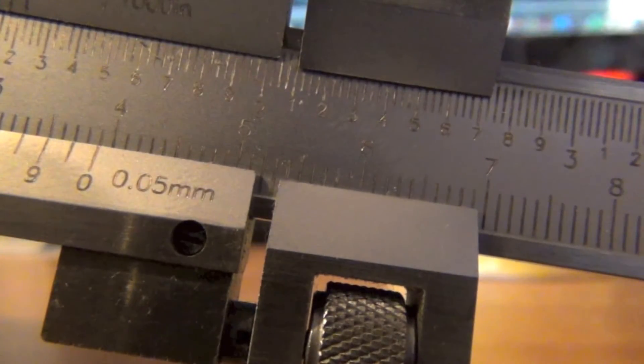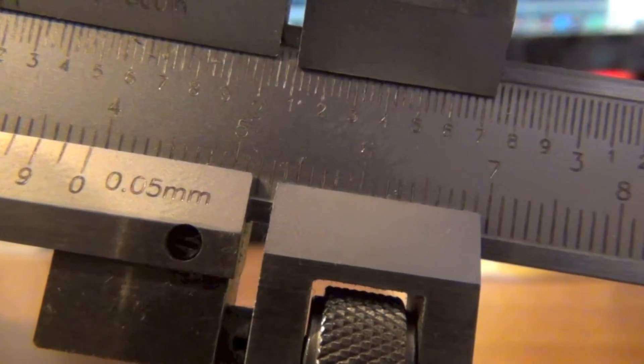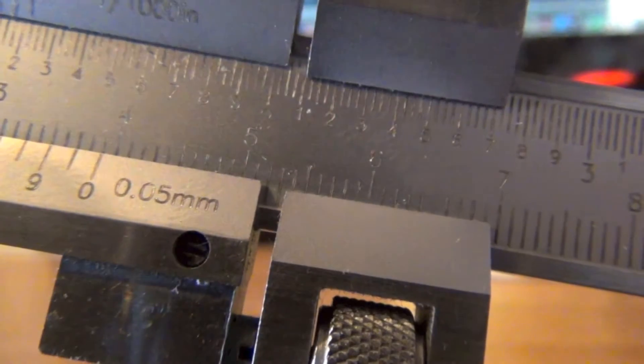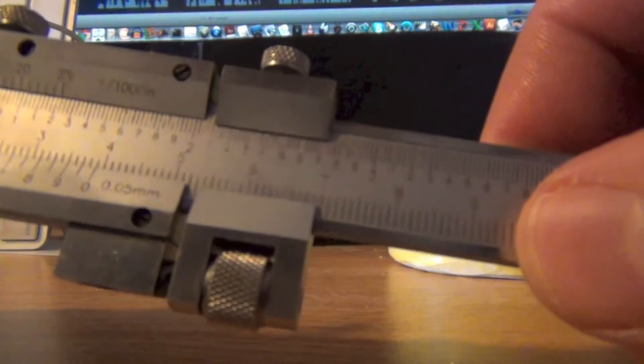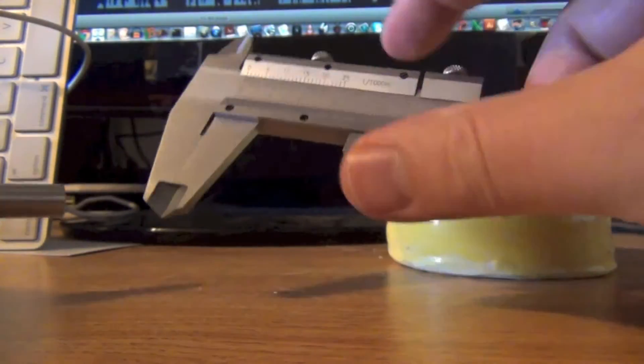The resolution of a vernier caliper is often written at the end of the vernier sliding scale or it's written at the end of the actual major scale. This particular one measures in both inches and in centimeters.